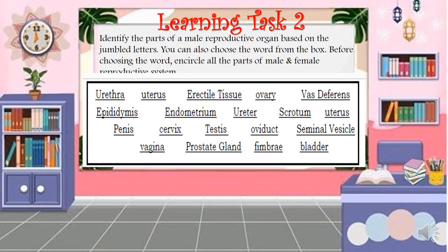Let us now answer Learning Task 2. Identify the parts of the male reproductive organ based on the jumbled letters. You can also choose words from the box and circle all the parts of both the female and male reproductive system. The word bank includes: urethra, uterus, erectile tissue, ovary, vas deferens, epididymis, endometrium, ureter, scrotum, penis, cervix, testes, oviduct, seminal vesicle, vagina, prostate gland, fimbrae, and bladder.